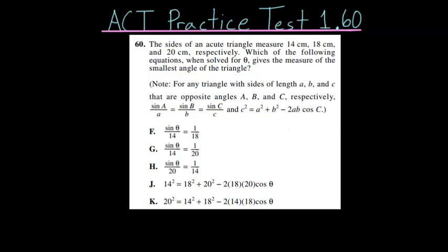For the 60th problem on this first ACT practice test, the sides of an acute triangle measure 14, 18, and 20 centimeters respectively. Which of the following equations, when solved for theta, gives the measure of the smallest angle of the triangle?